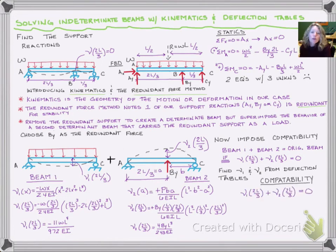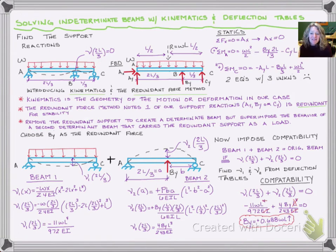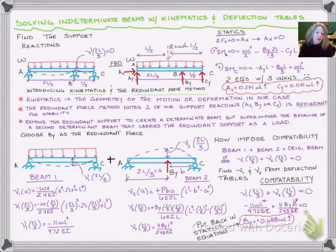We're imposing compatibility, saying that those two added together have to equal zero. So we add them together, set it equal to zero, and we can find BY. We get a positive answer, so our upward direction is correct. Now that we know BY, we put it back into our statics equations and solve for AY and CY. We've now found all support reactions.